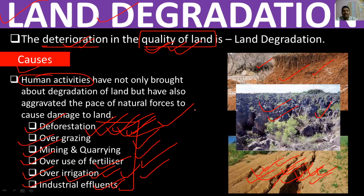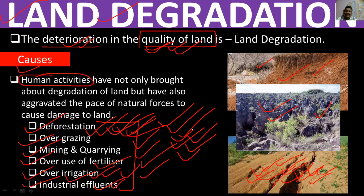If trees and grass are present on the land, the land remains strong. The roots of trees and grass hold the land firmly, giving it strength. When they are removed, the land becomes loose and wind can easily cause soil erosion, carrying the loose soil away. All the degradation you see in the image is a result of this.